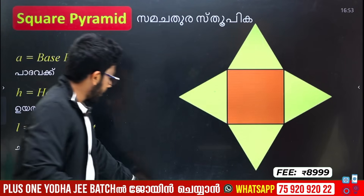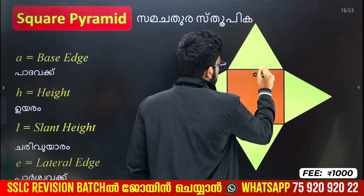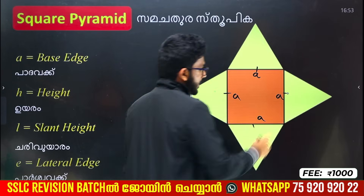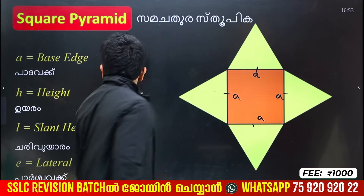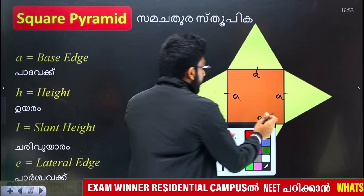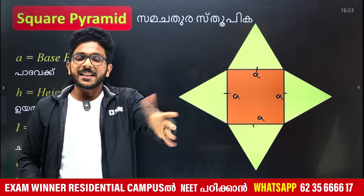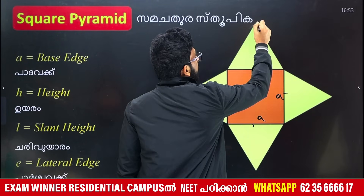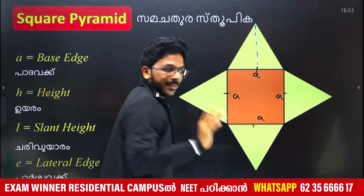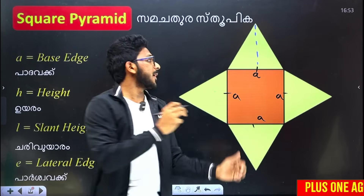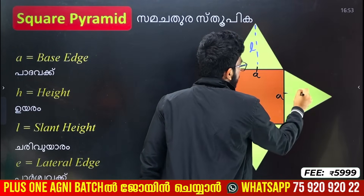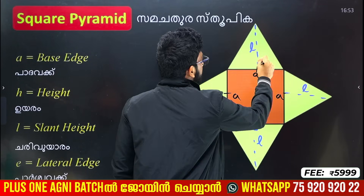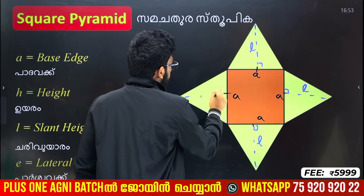I am going to say N is the base edge. Note, this is the base edge — A, A, A, A. This is a square with side A. We have to add height. This is the height. The base is 90 degrees.